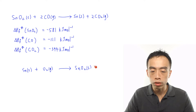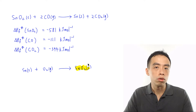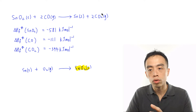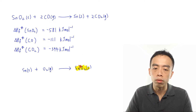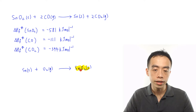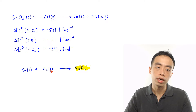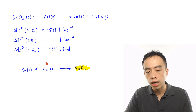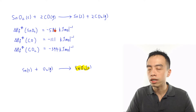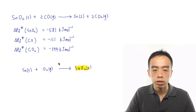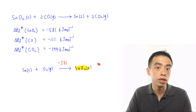To write the formation equation for tin oxide, the coefficient for the compound must be 1. I have 1 tin on the right-hand side, so 1 tin on the left; 2 oxygen on the right, so O₂ on the left. The equation is balanced, and this energy change — the formation of tin oxide — is minus 581 kJ per mole, which I put on this arrow.